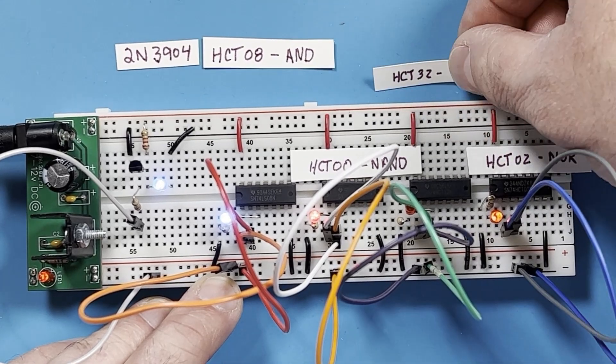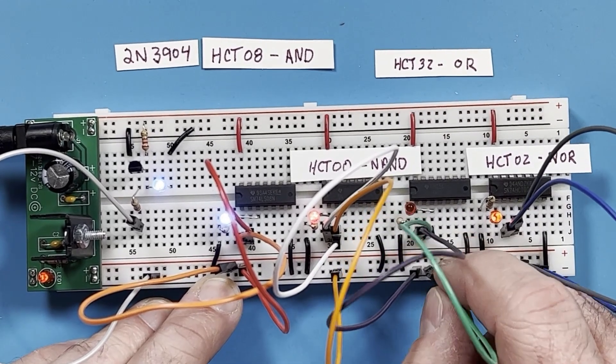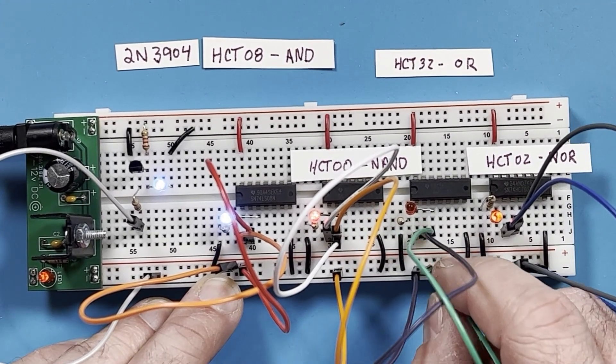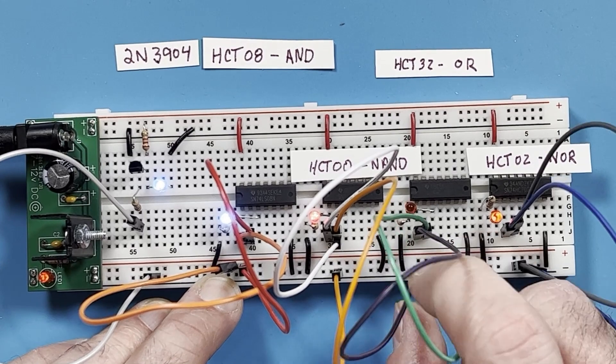Over here, we have the HCT32 OR gate. Just like it sounds, the output goes high if either or both of the inputs is high.